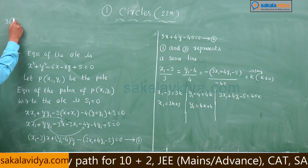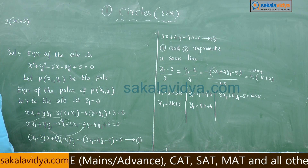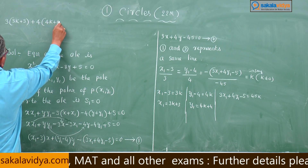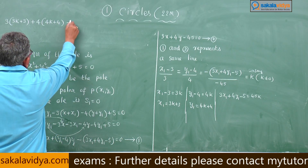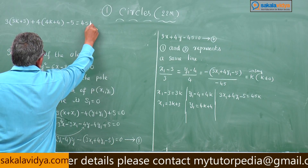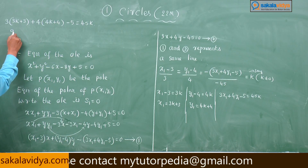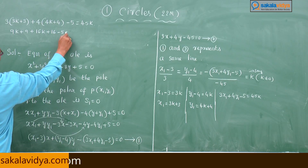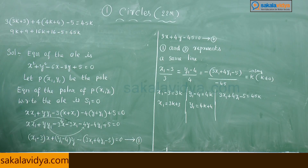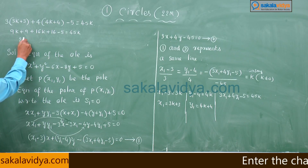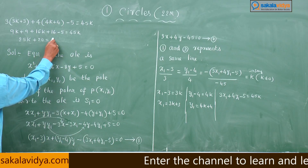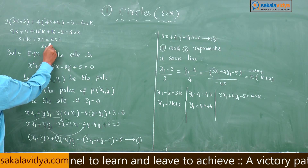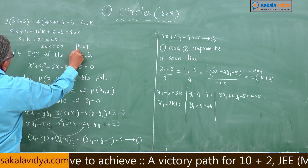Substituting: 3(3k + 3) + 4(4k + 4) - 5 = 45k, which gives 9k + 9 + 16k + 16 - 5 = 45k, so 25k + 20 = 45k, then 45k - 25k = 20, so 20k = 20, therefore k = 1.